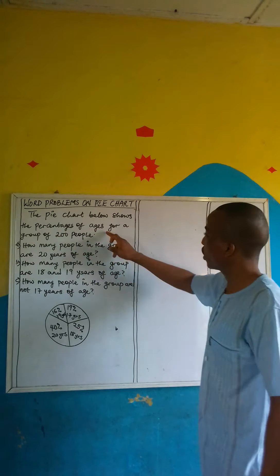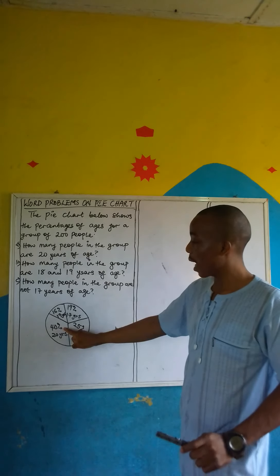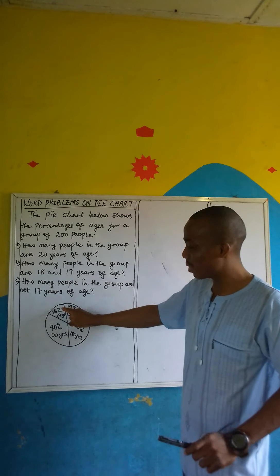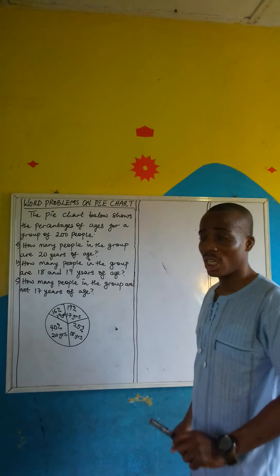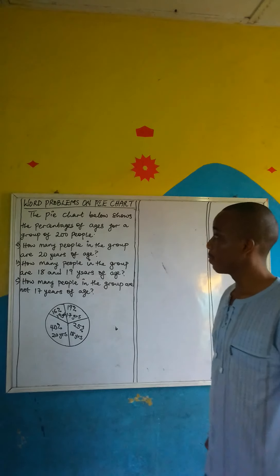This is the pie chart. We can see that 19% are 17 years of age in the group, 25% are 18 years of age, 40% are 20 years of age, and 16% are 19 years of age in the group.